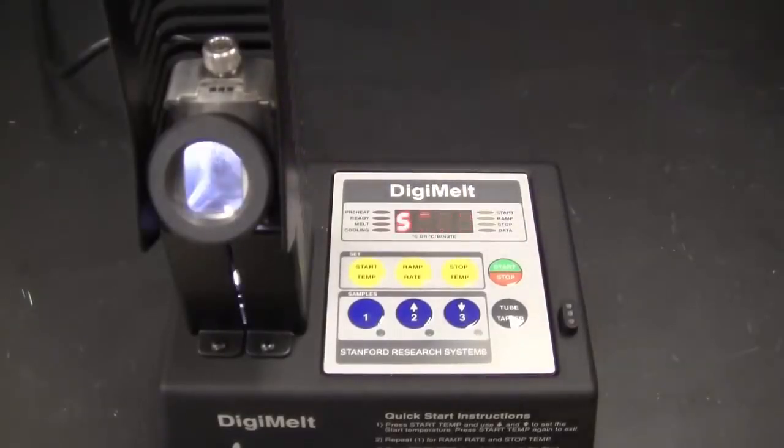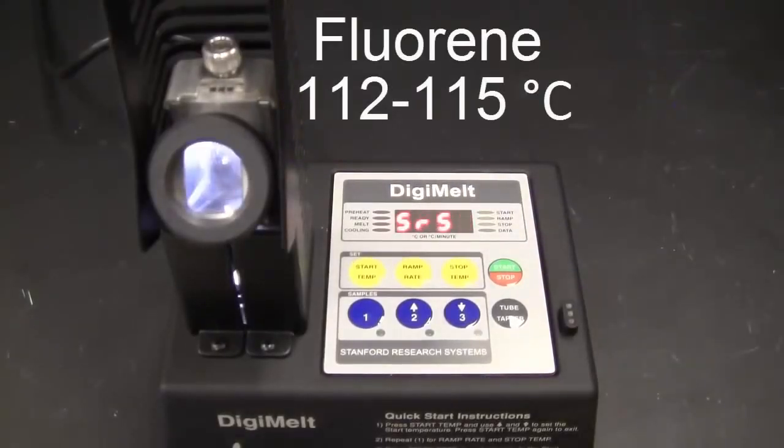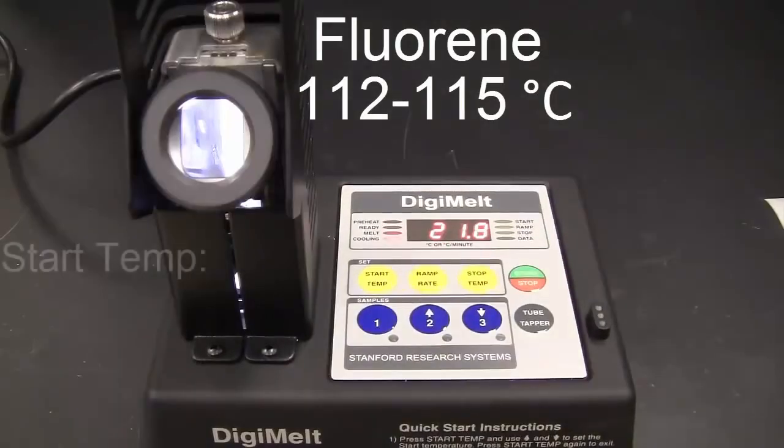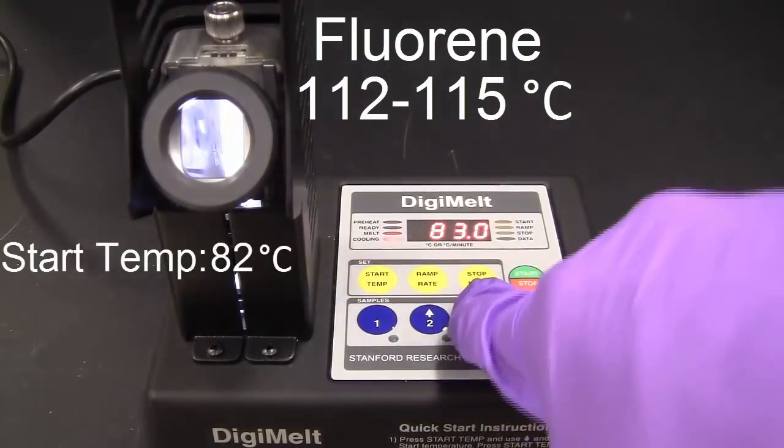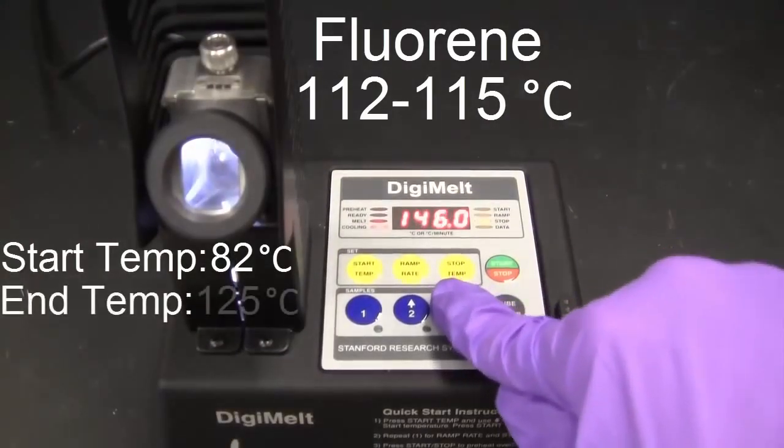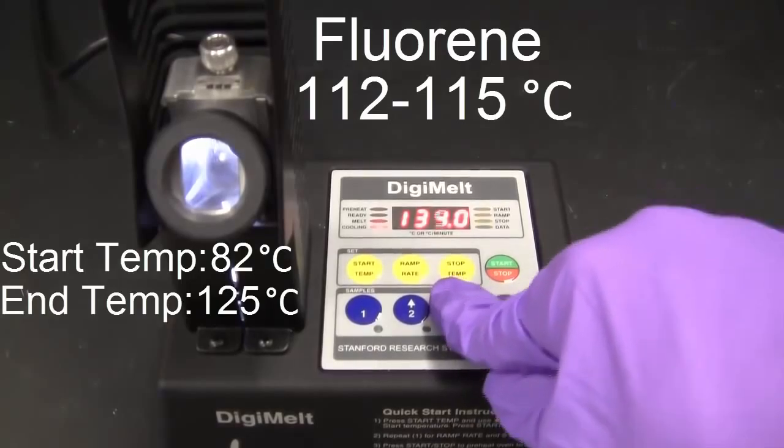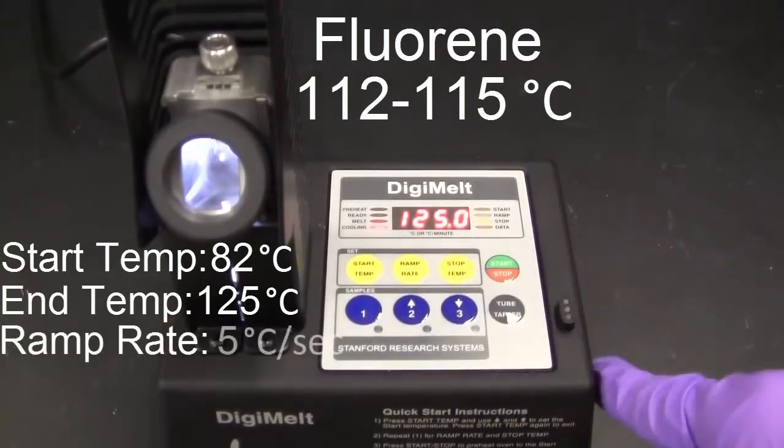Turn on the Digimelt and adjust your settings. Find the accepted melting point value for your substance and set the starting temperature 30 degrees lower. Set your final temperature 10 degrees higher. Set the ramp rate at 5 degrees per second.